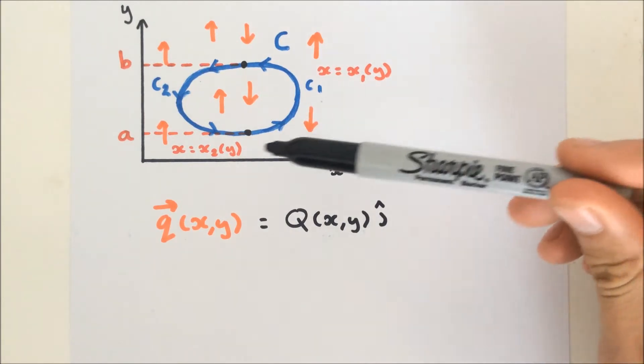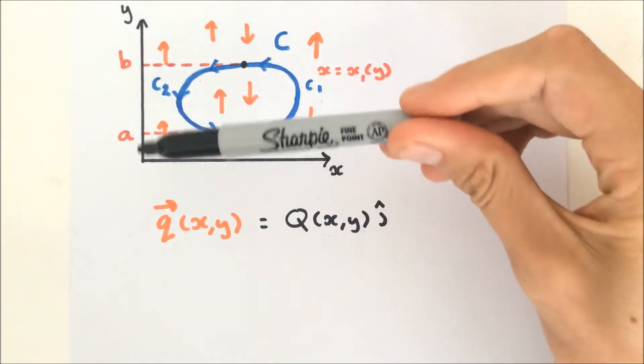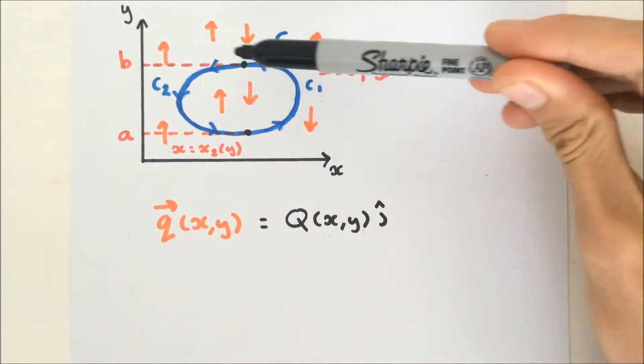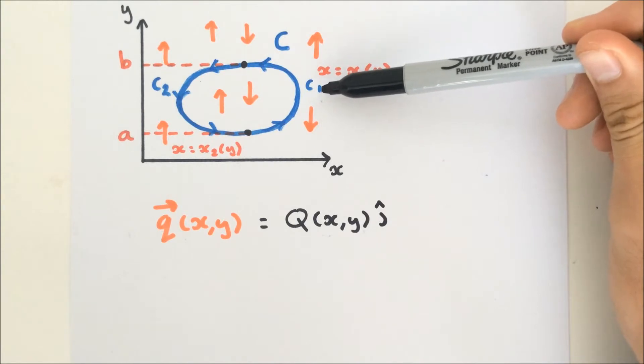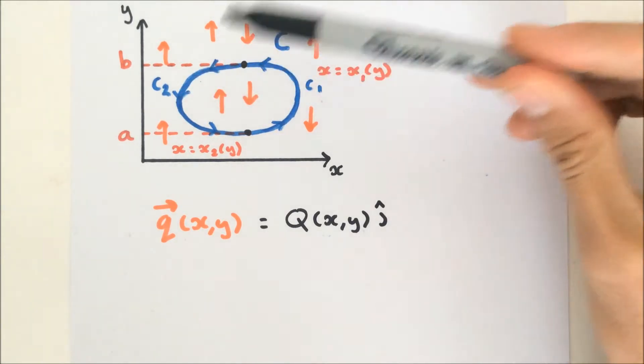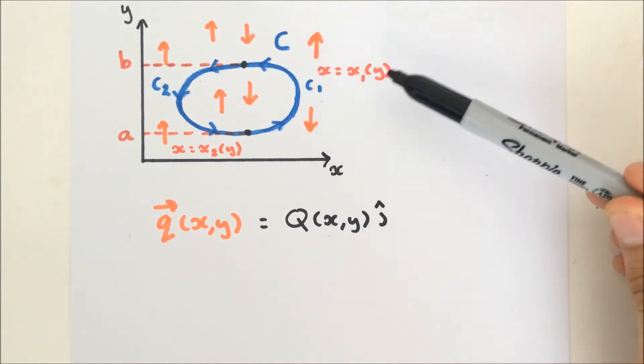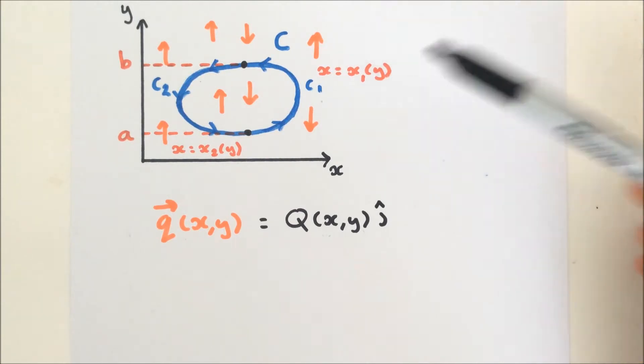So as you can see, this time we have limits A and B defined on the y-axis, but we still have a curve C, but this time C1 and C2, of course, where x is a function of y this time.